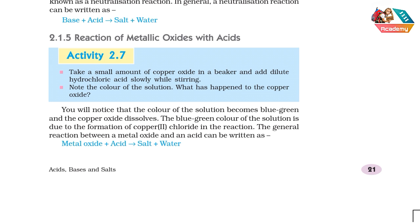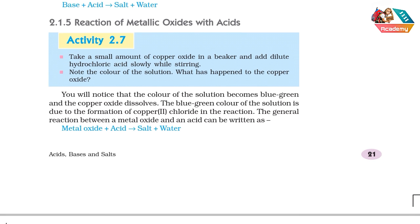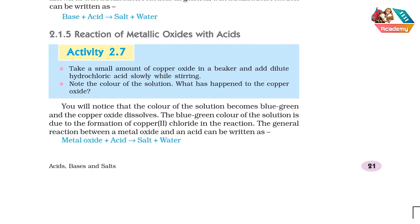Next is the reaction of metallic oxide with acid — Activity 2.7. Take a small amount of copper oxide in a beaker and add dilute hydrochloric acid slowly while stirring. Mix it well and note the color of the solution and what has happened to the copper oxide.